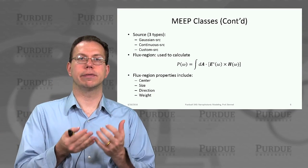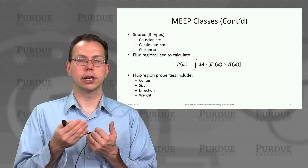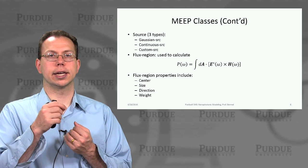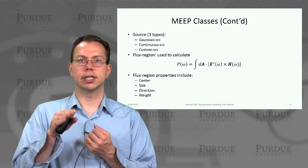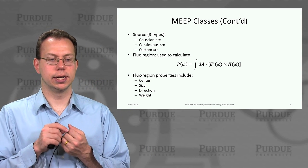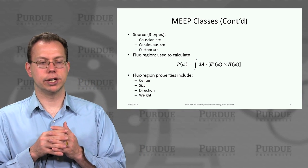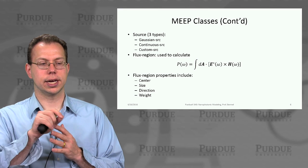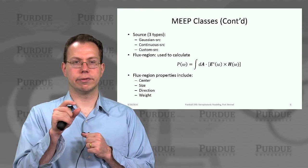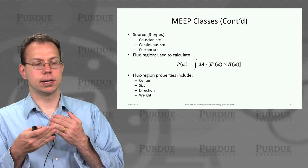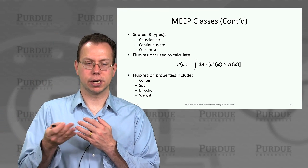Once the geometry is set up, you need to initiate the fields through sources. There can be Gaussian sources, where a current has a certain central frequency with a Gaussian envelope of frequencies. You can also have a continuous source that oscillates at a single frequency for the duration of the simulation, or custom sources that don't follow those rules.